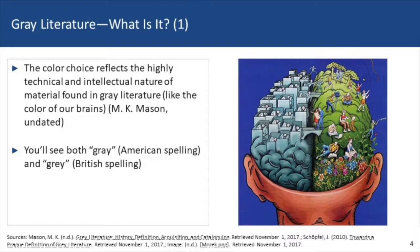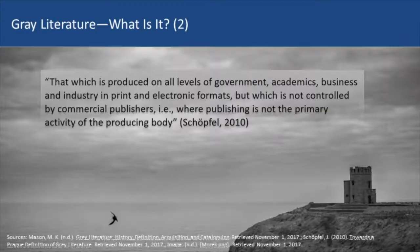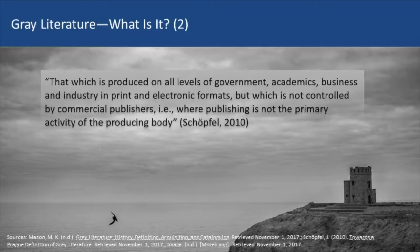You will see gray literature spelled both with an American and a British spelling. The most common definition is that gray literature is produced on all levels of government, academics, business, and industry in print and electronic formats, but which is not controlled by commercial publishers — that is, publishing that's not done by a company for which it's their primary business.